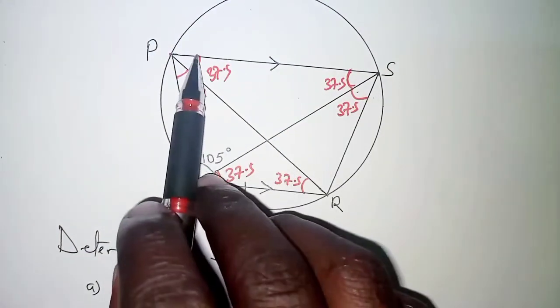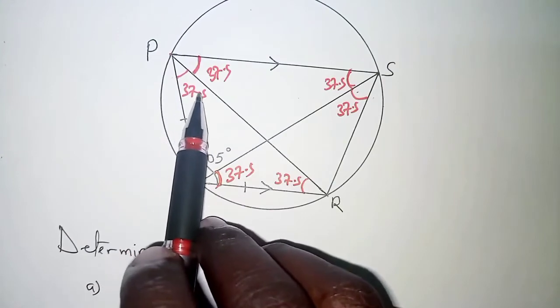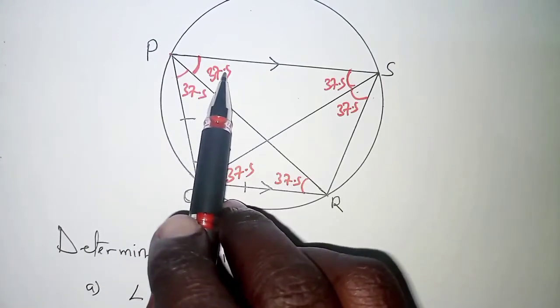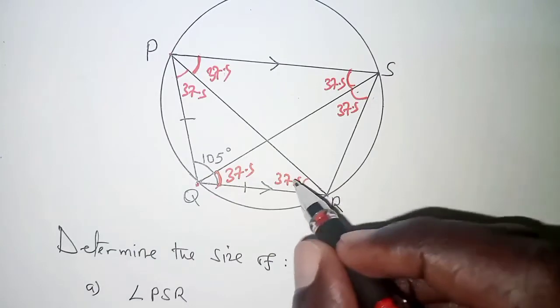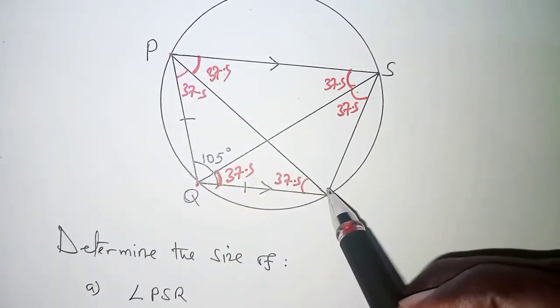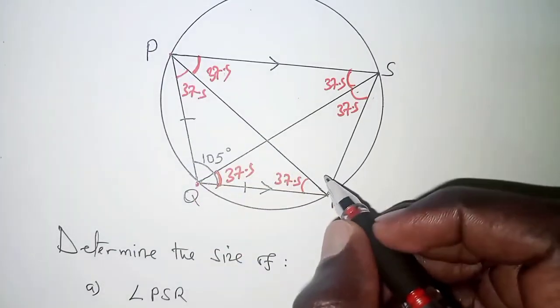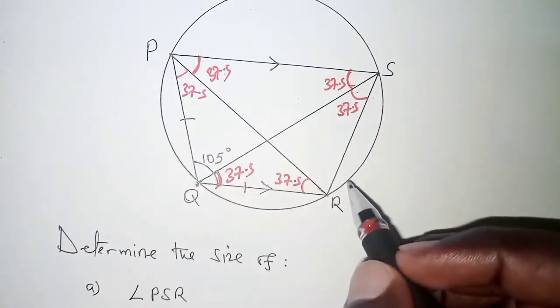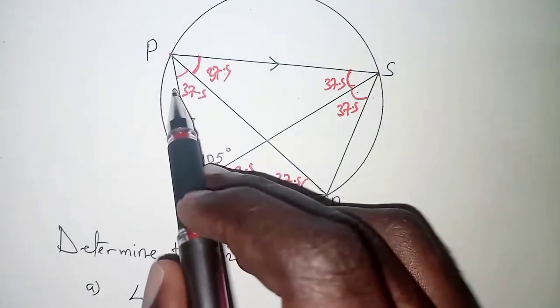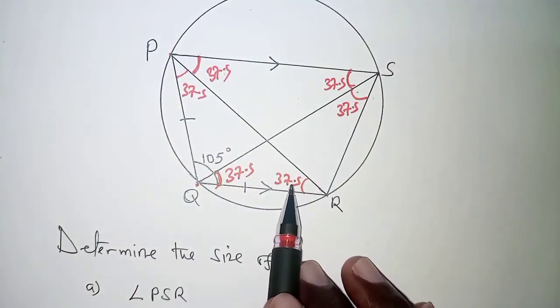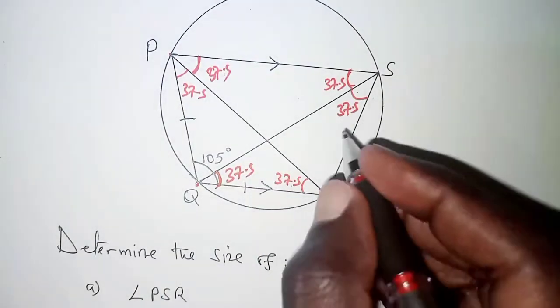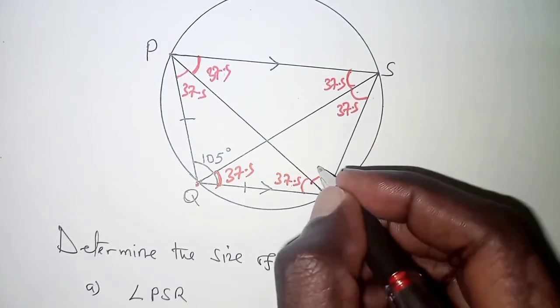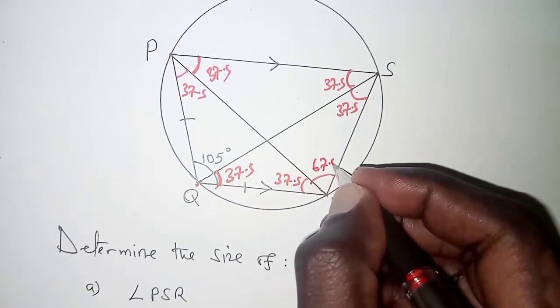Another thing at this particular point we have 37.5 plus 37.5 that gives us 75 and therefore opposite angles of a cyclic quadrilateral should add up to 180 and this is already 75 so 75 plus 37.5 and then you subtract from 180 that should give us 67.5.